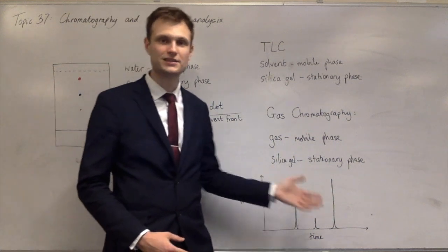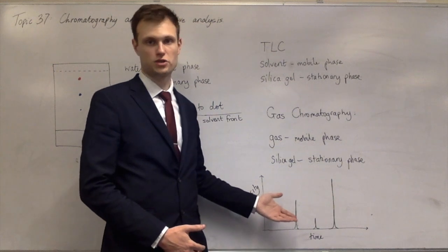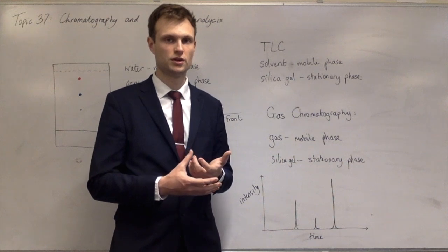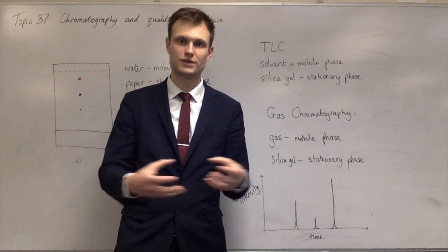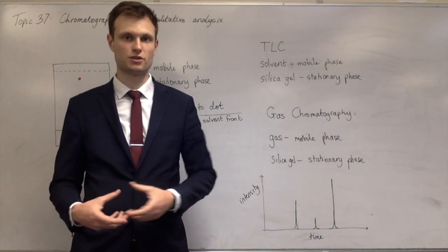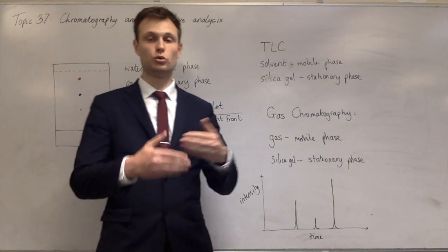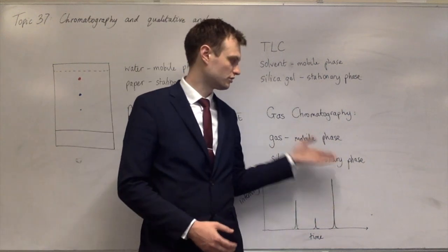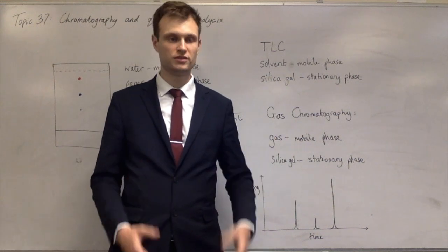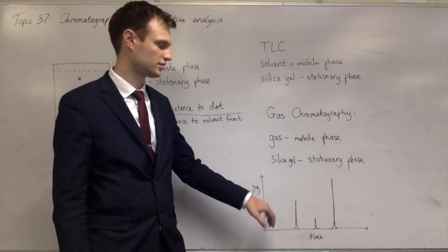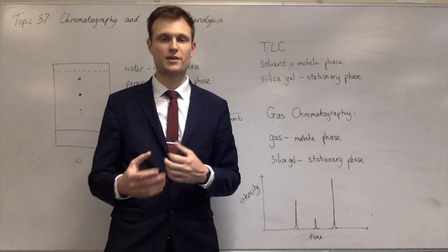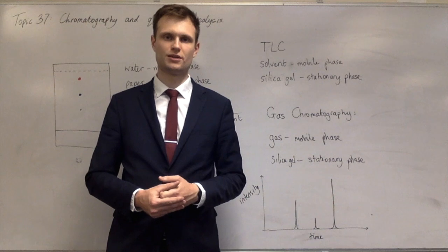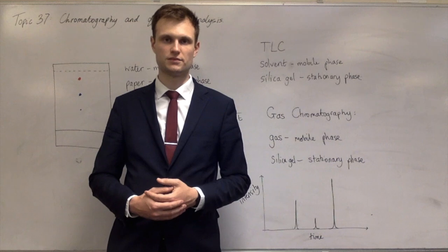The simplest questions will just ask you how many different compounds are in the sample. Other times they might ask which one's which. If you've got a polar stationary phase, then the more polar molecules will take the longest to get out, because polar molecules interact most strongly with a polar stationary phase, while non-polar molecules don't interact and come out quicker. They'll ask you to order them — so if you've got a stationary phase that can make hydrogen bonds, the molecule which makes the most hydrogen bonds takes the longest to get out. If two molecules are very similar — say two different esters — they'll have very similar retention times, making it difficult to distinguish between them.